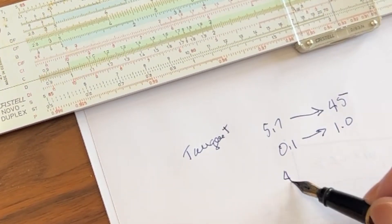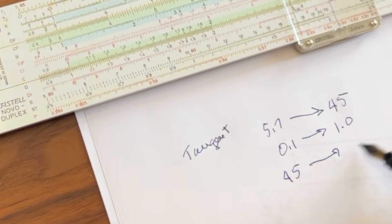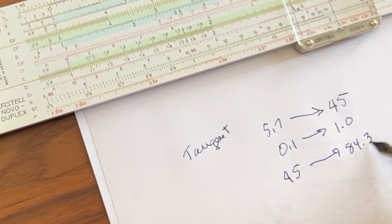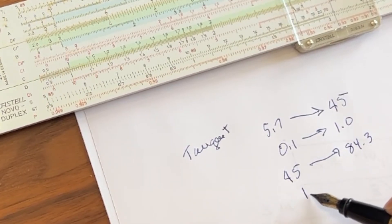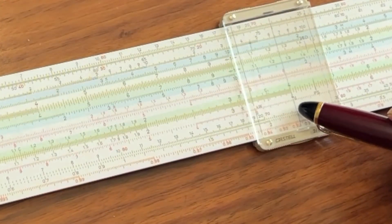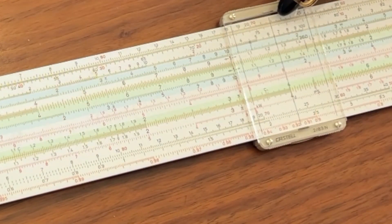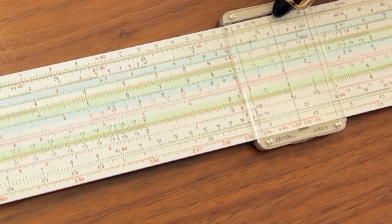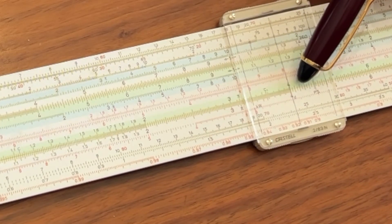Whereas if you go from 45 to 84.3, your tangent value will go from 1.0 to 10. If you come down to the C and the D scale at 4, that means that the tangent of about 21.8 is going to be 0.4.